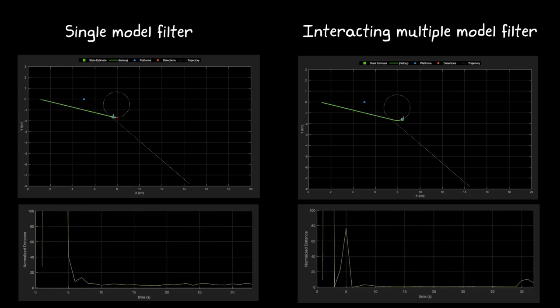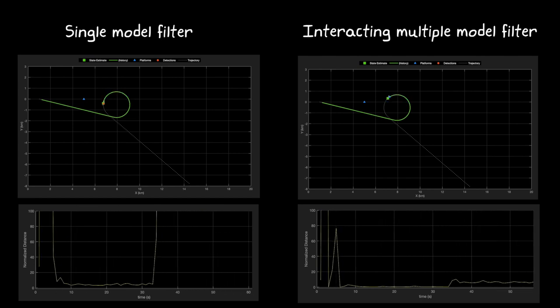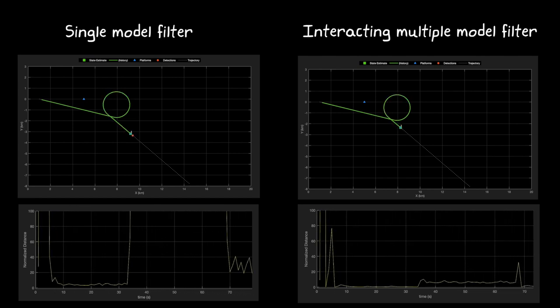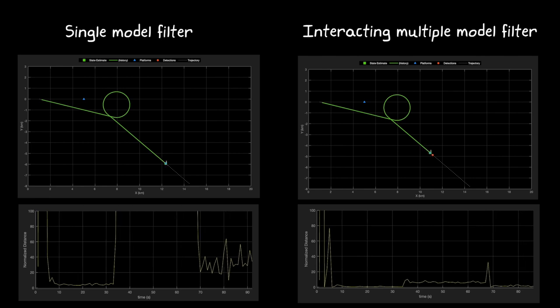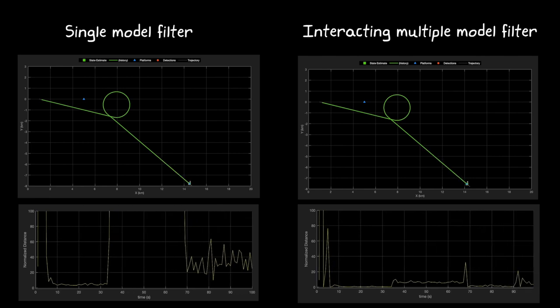On the left is the result for a typical single model filter. On the right is the result for an interacting multiple model filter. The bottom graph shows the normalized distance between the object's true position and the estimated position. As you can see, the IMM does a much better job tracking this maneuvering object.